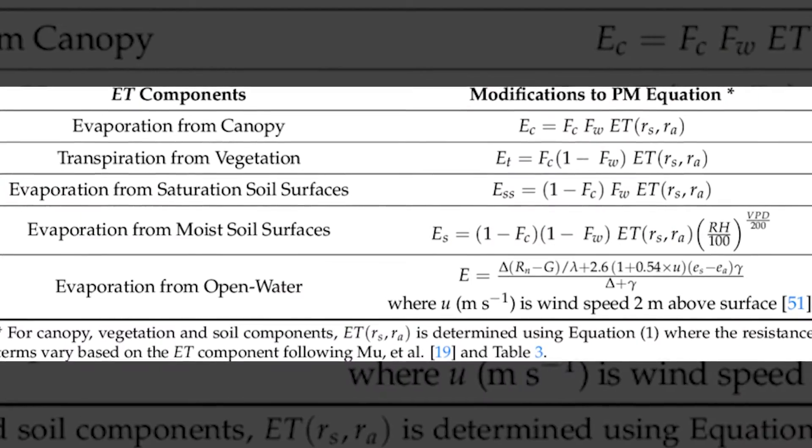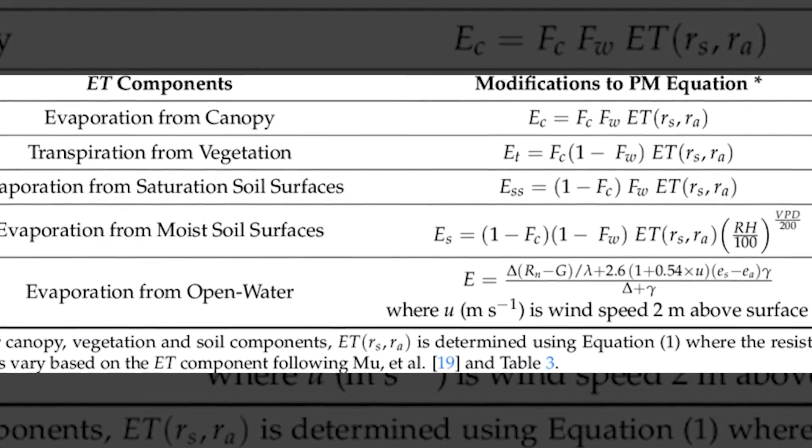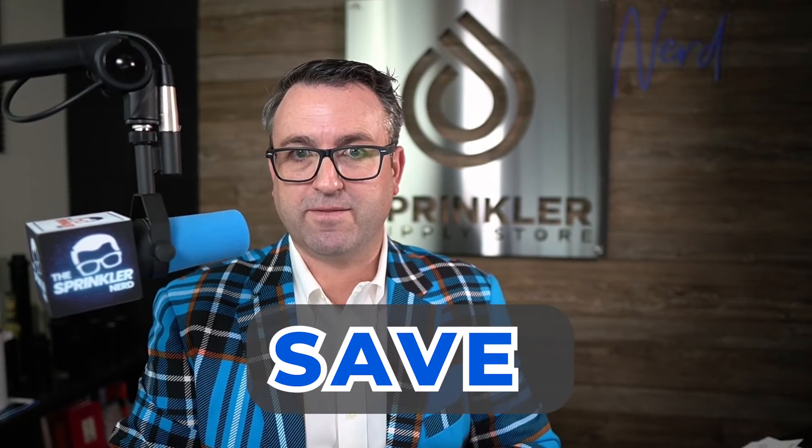It's important to remember that ET is a calculation — it is not measuring real-time water loss in the soil right now. The best way to do that is to use a soil moisture sensor; it's actually the only tool you can use to measure real-time ET loss as it's happening in the landscape. But evapotranspiration curves and calculations are great for estimating and forecasting purposes, and if you implement them right with your smart timer, you can save water.